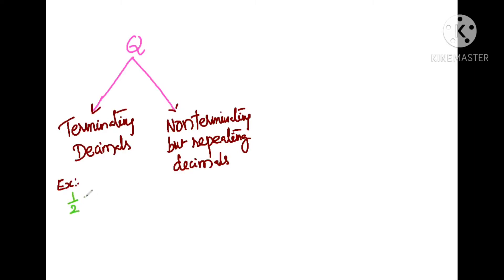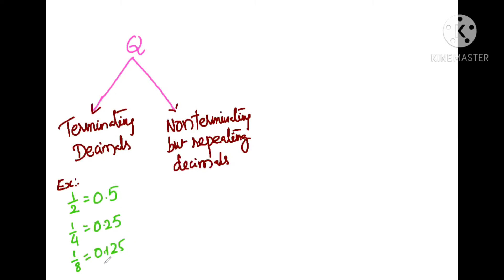For terminating decimals: 1/2 is a terminating decimal equal to 0.5; 1/4 equals 0.25; 1/8 equals 0.125. The decimals terminate. These terminating decimals can be written in the form of P/Q — 1/2, 1/4, 1/8. Moreover, there are also non-terminating decimals.